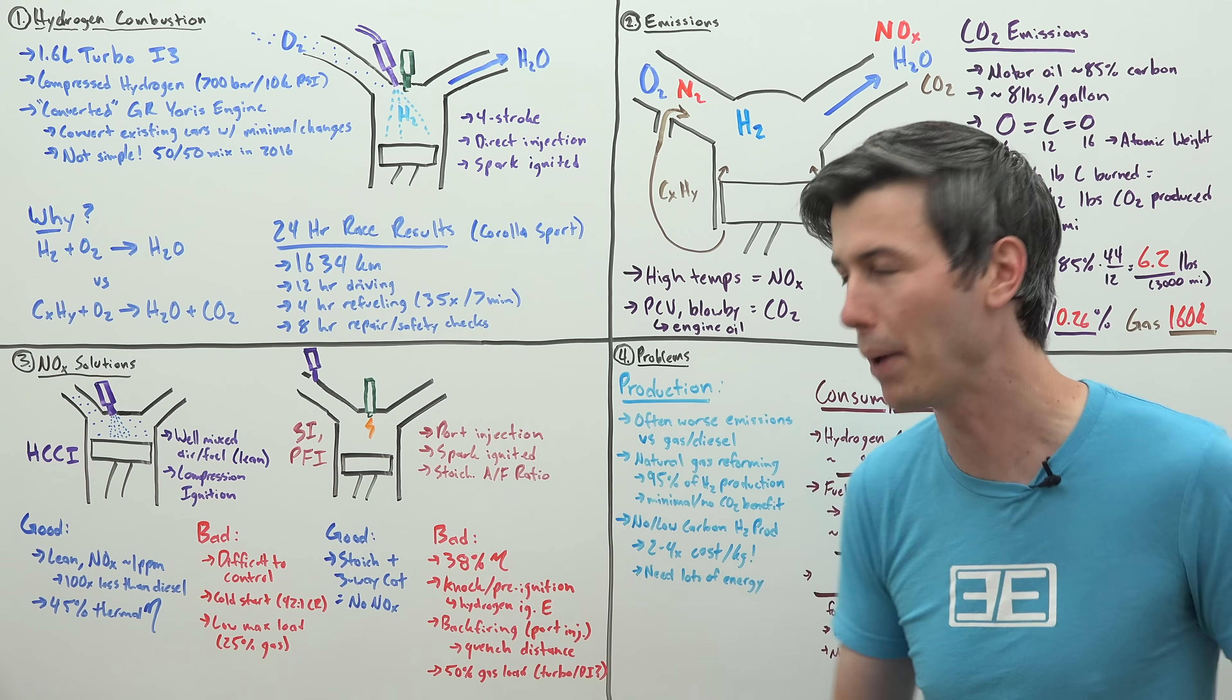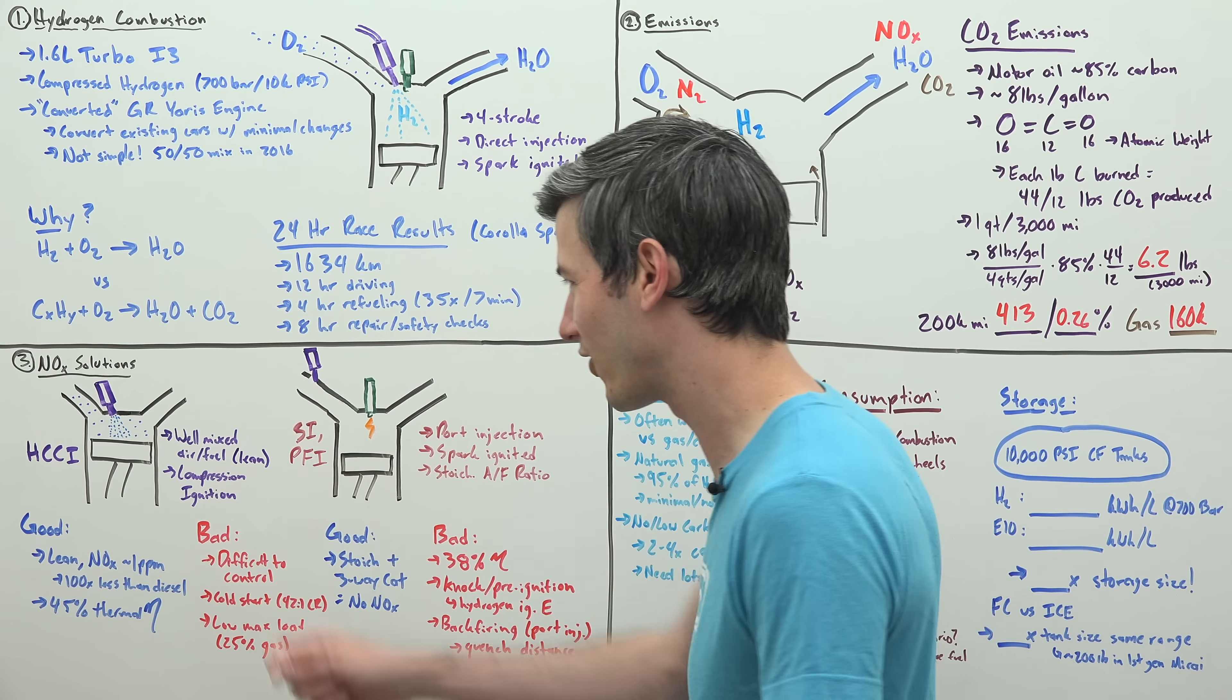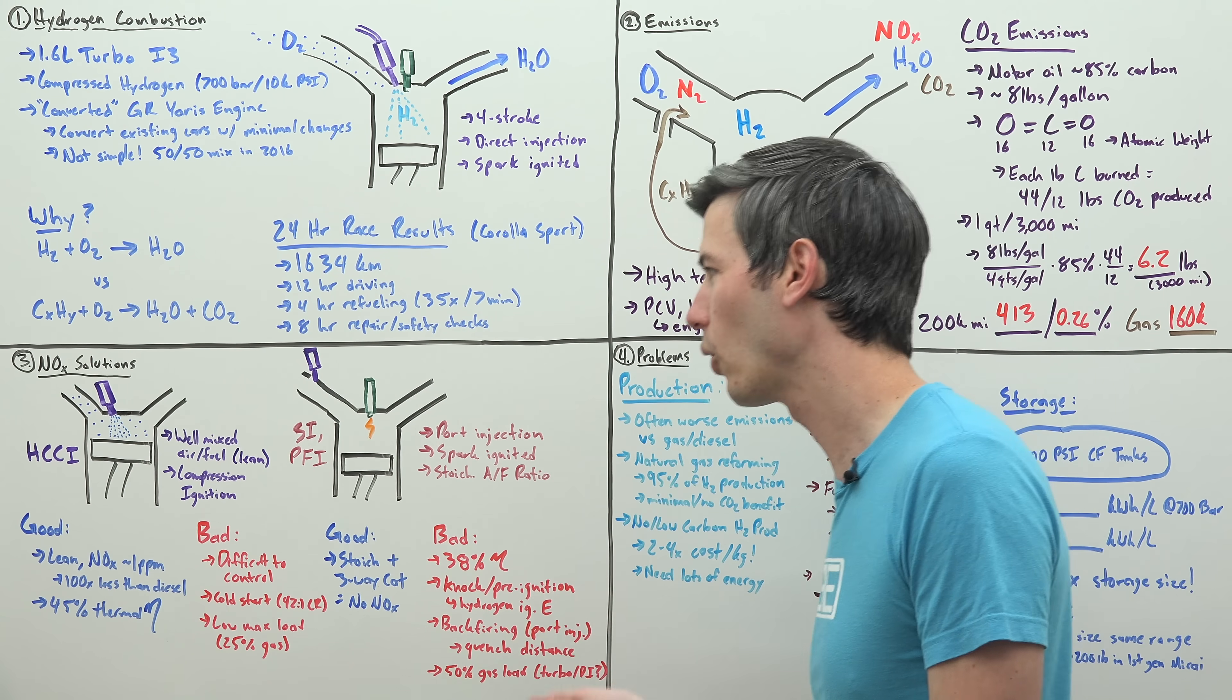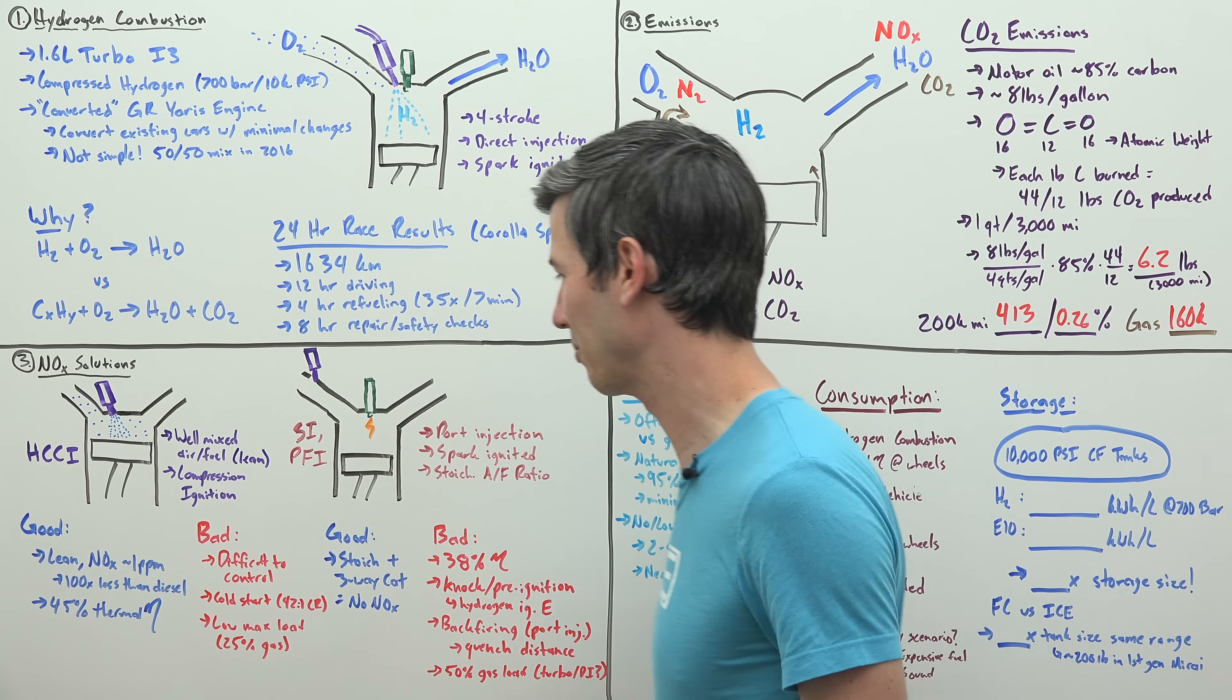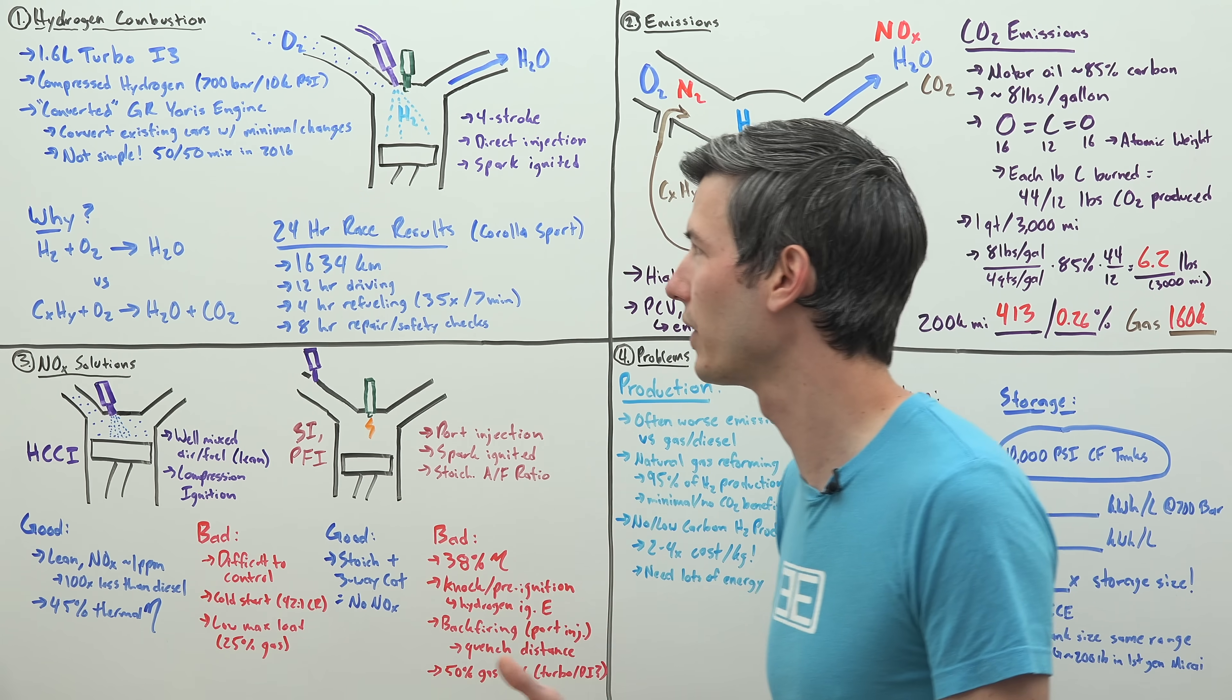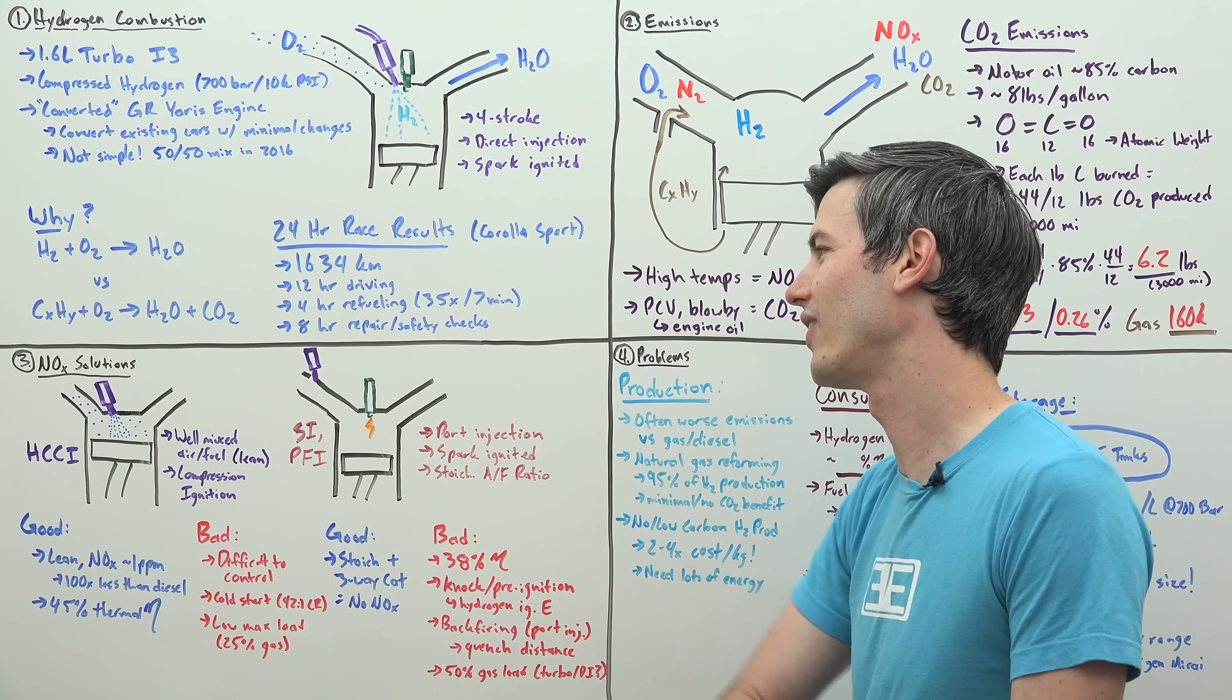A hundred times better than today's diesel engines. From a thermal efficiency standpoint, these are at about 45% thermal efficiency, which is fantastic. What's the bad news? HCCI is very difficult to do. It's why we don't have production example engines of HCCI in cars today. Very difficult to control. I saw a study saying you would need a compression ratio of 42 to 1 for a cold start in an HCCI hydrogen engine. Another really big piece of bad news is that they would only have 25% of the load capability versus a gas engine, meaning one-fourth the power. Some big challenges with HCCI hydrogen engines.